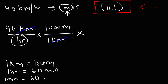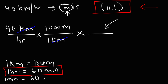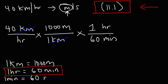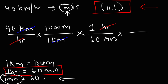Next we need to convert hours into seconds, but let's first convert to minutes using this conversion factor. Notice that the unit hours is on the bottom, so in the next fraction we want the unit hours to be on the top. So we have one hour which is equal to 60 minutes, and we can cross out the unit hours. Using the last conversion factor, we need to convert minutes to seconds. Since we have minutes on the bottom, we put that part on top. Now the unit minutes will cancel.